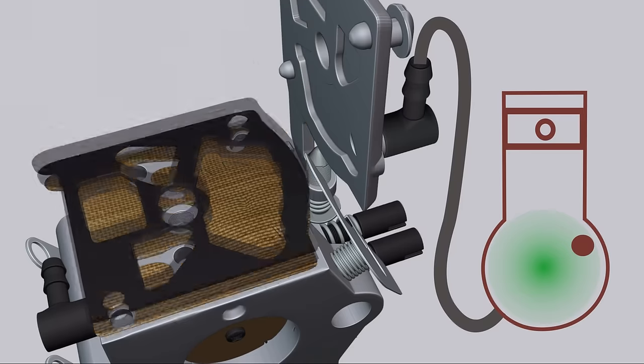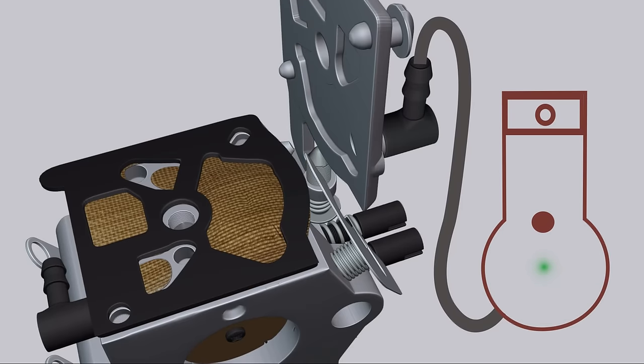Atmospheric pressure forces the fuel from the tank to move into the low-pressure zone. Fuel bends the intake valve pedal and fills the bypass chamber.